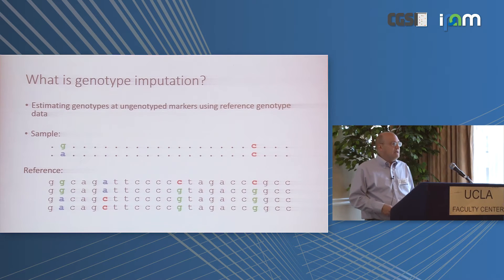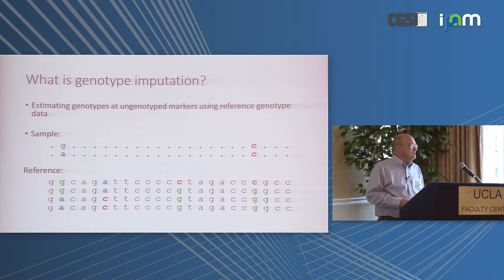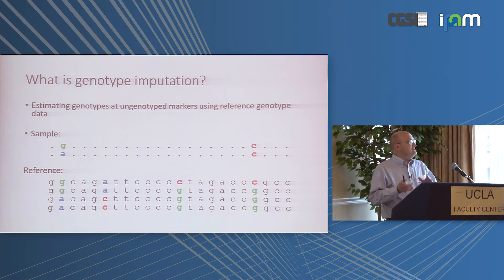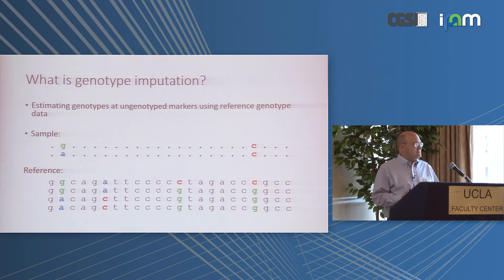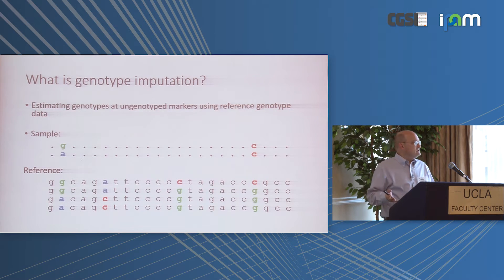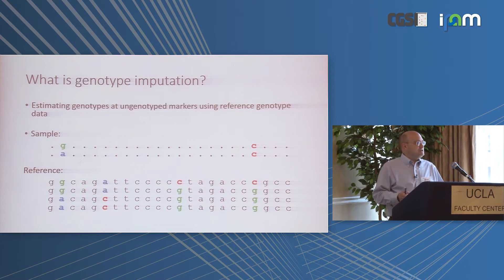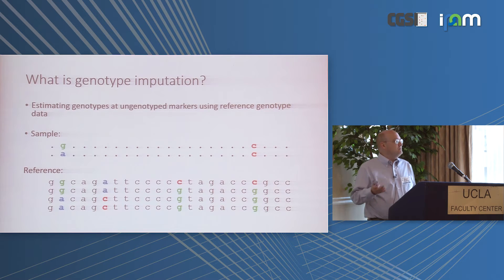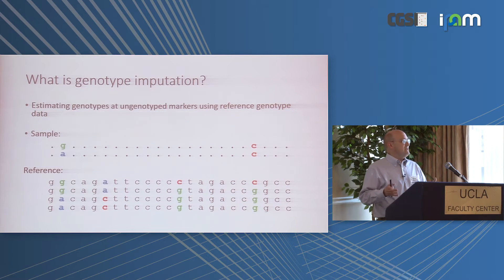Genotype imputation is the filling in of genotypes. It originally started where you were actually imputing genotypes, but now, for computational reasons, we work at the haplotype level, imputing alleles. Your reference data consists of two phased reference haplotypes per reference sample. The sample you're imputing also has two haplotypes but is missing a lot of data — it's typically genotyped on a SNP array.